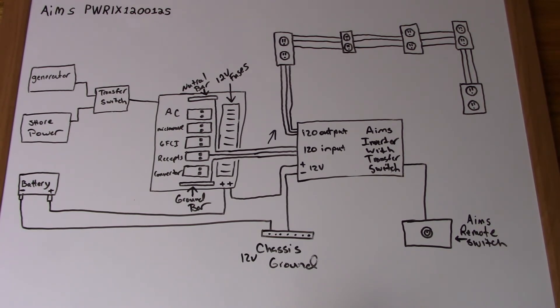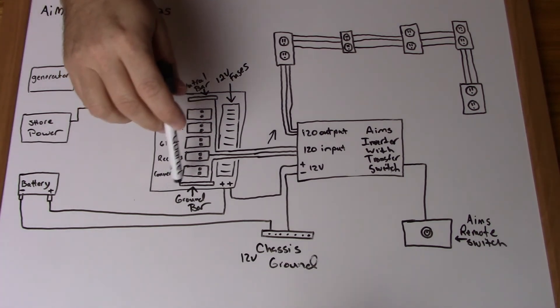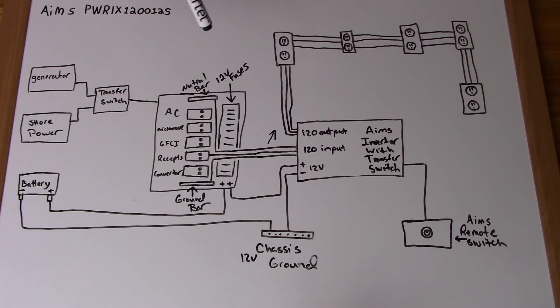That being said, as long as the transfer switch is working and you have power to the inverter, whether you have 120 or 12 volts, you're going to have power at the receptacles. There's just no way around that configuration. If you wanted to run the entire electrical panel off of one inverter, it's going to take a larger inverter than what we have here. That would be a whole different wiring diagram, a whole different setup. I'm not going to get into that. I'm simply explaining how we did the Ames PWRIX120012S.